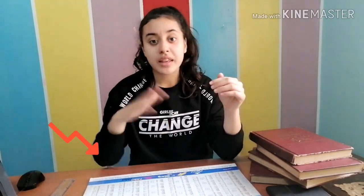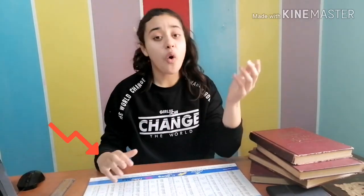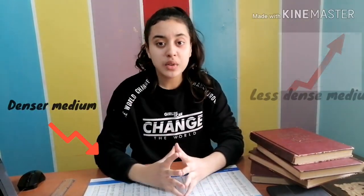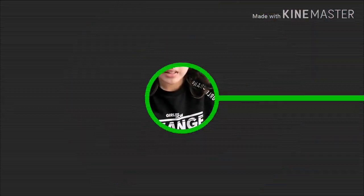A medium is any substance. So when light travels from a medium to another, its speed changes — either decreases or increases — depending on the density of the two mediums. This change in light speed or velocity causes a change in its direction, and consequently light bends, or more specifically, refracts.